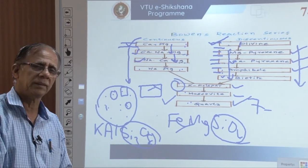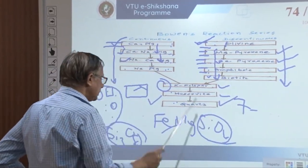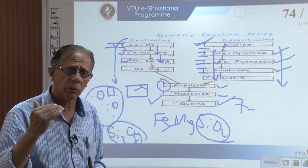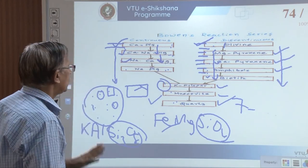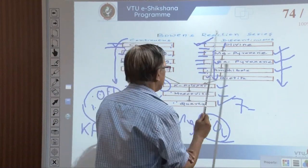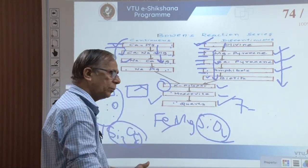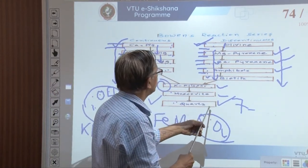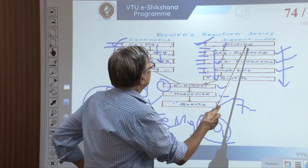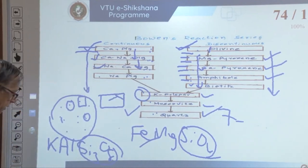Regarding incongruent melting: olivine and quartz should not coexist according to Bowen's reaction series, but once in a very rare case, olivine and quartz can coexist. This is called incongruent melting — olivine failed to be separated out of the system, still remained, and crystallization continued with quartz developing. This mineral could not escape the system, remained present, and they both crystallized. This process is called incongruent melting.